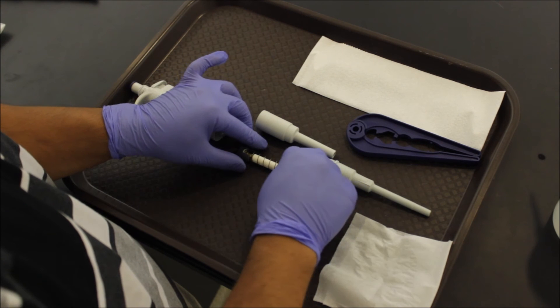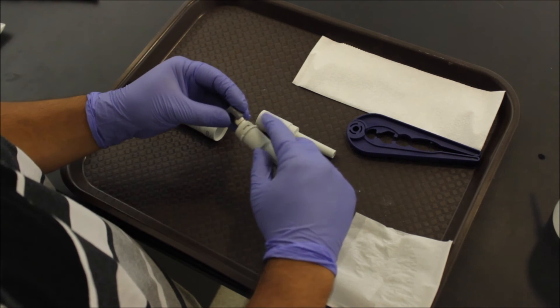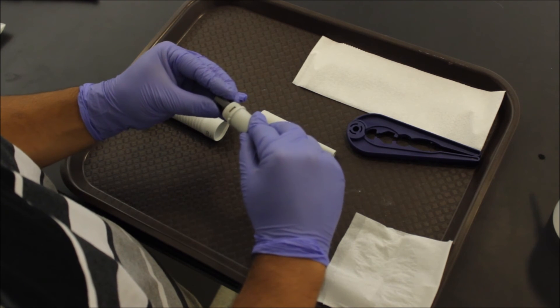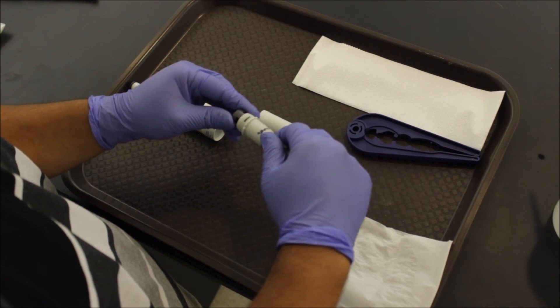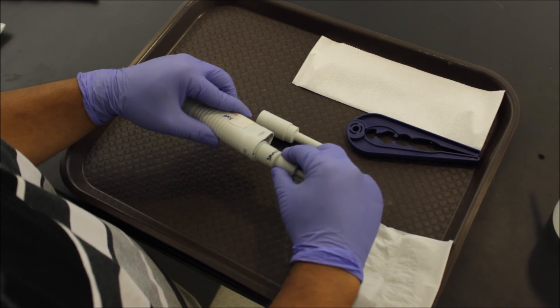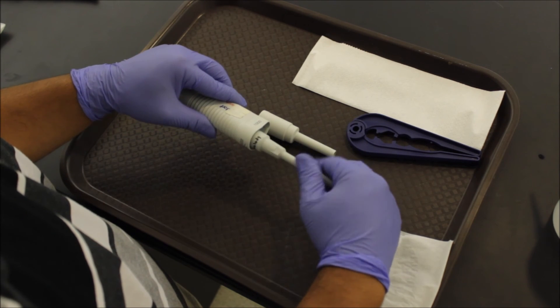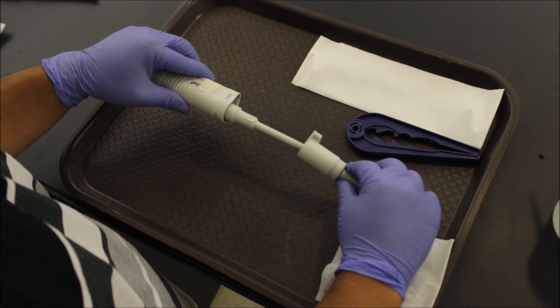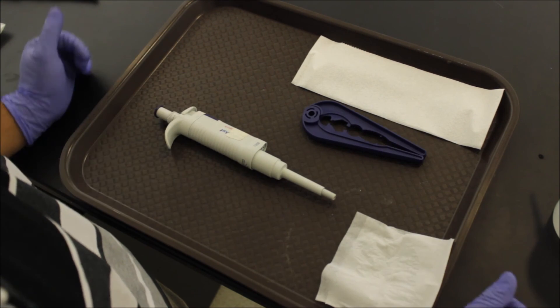Now here you have all the pieces. So for reassembling, I'm going to attach this core back into the inner barrel. Make sure this slides back into the slit. Now we're going to take this and twist it back into the pipette. Make sure it's nice and snug. Reattach the outer shaft. Once we do that, we're done.